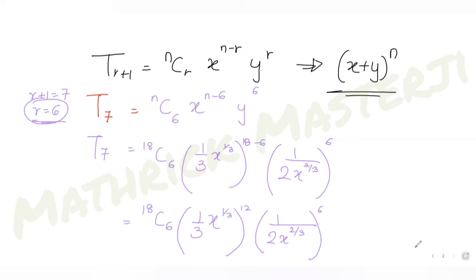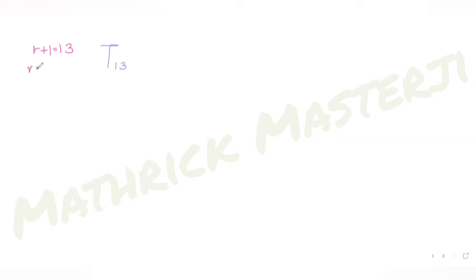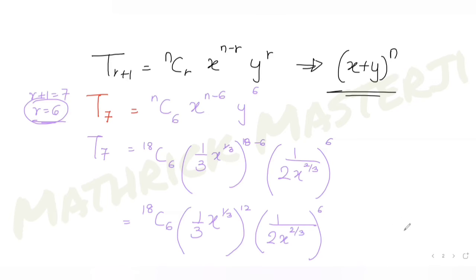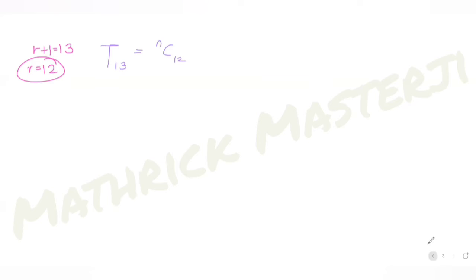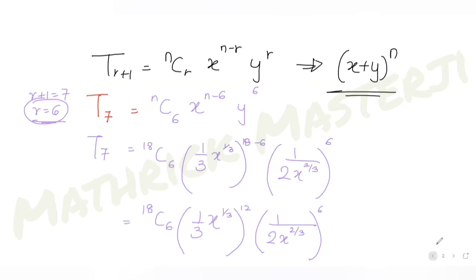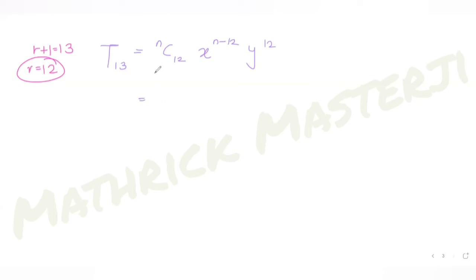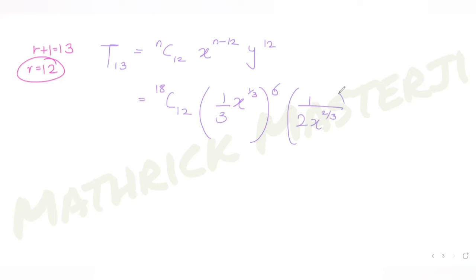For the 13th term, r+1 = 13 gives r = 12. So the term is 18C12 · (x^(n−12)) · y^12, which gives 18C12 · (1/3 · x^(1/3))^6 · (1/2 · x^(2/3))^12. This is the 13th term.